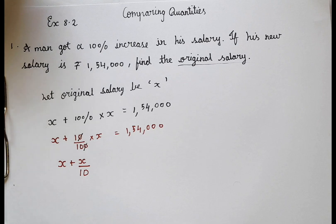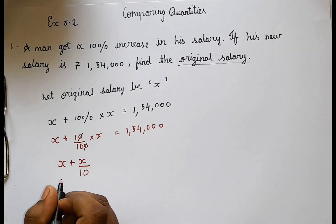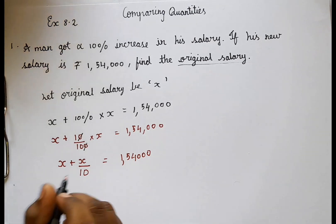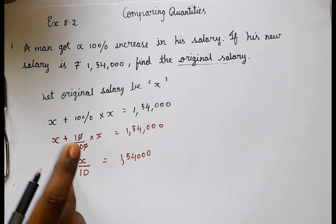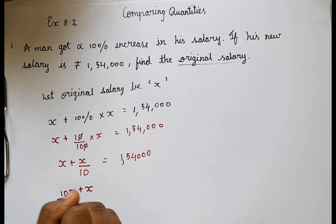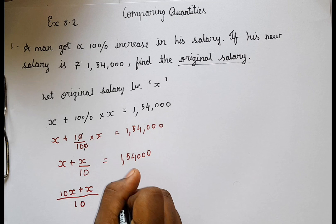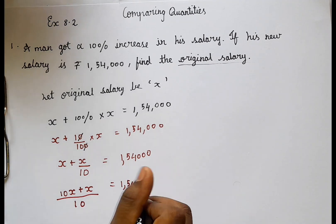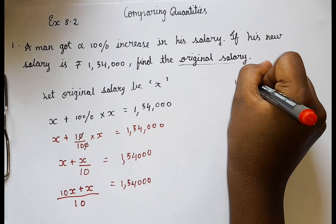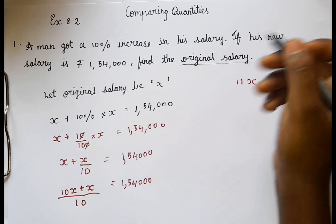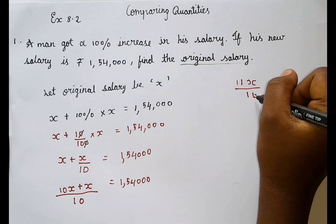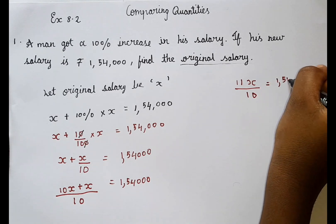So now we are going to do a simple step. Let me just write it. 1,54,000. So now we are going to multiply 10 with x, like cross multiplication. So 10 into x is 10x. So 10x plus x by 10 is equal to 1,54,000. So now 10x plus x is 11x. How 11x? Because x will also have a value 1. So 11x by 10 is equal to 1,54,000.